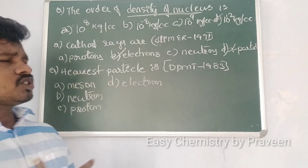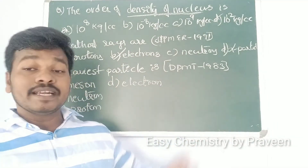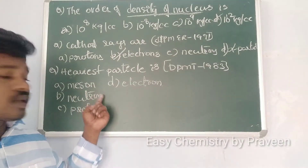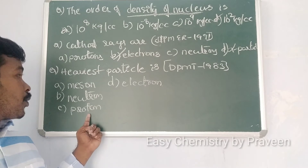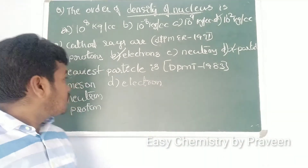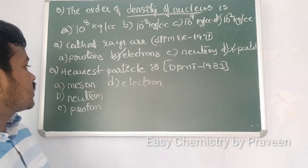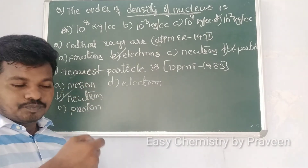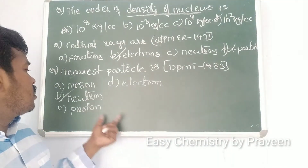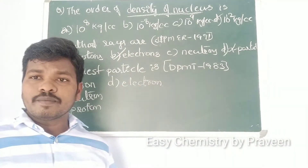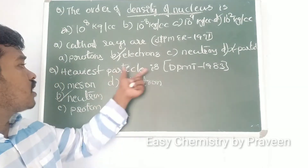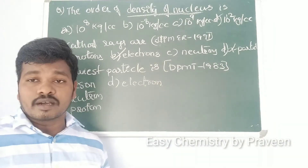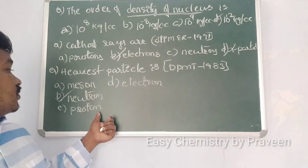The heaviest particle — from DPMT 1983 — options: meson, neutron, proton, and electron. Among all these, the neutron has a little more mass than the proton and electron. So the heaviest particle among meson, proton, and electron is the neutron.